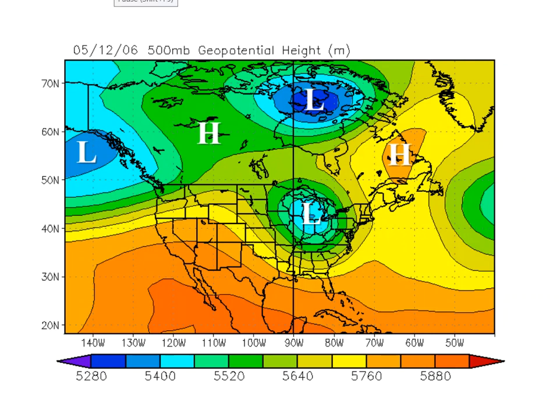Here's an example of a blocking pattern that's set up over Canada and U.S. northern border states, as shown on this daily composite of 500 millibar heights. There were two blocking highs — one located over Canada's northwest territories and the other simultaneously anchored over Newfoundland in eastern Canada.